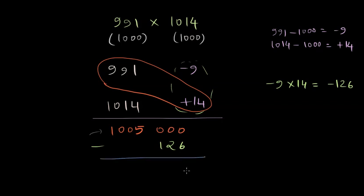The final result will be this number minus 126, which is going to be 10 lakh 4,874. So let me quickly write the concluding result: 991 times 1014 equals 10 lakh 4,874. Note that we have done subtraction because the signs of the supplements are different.